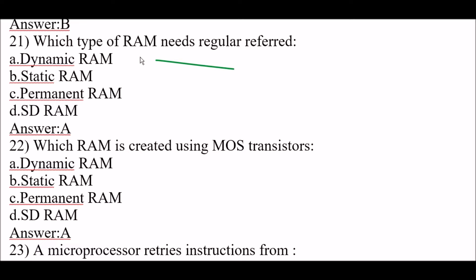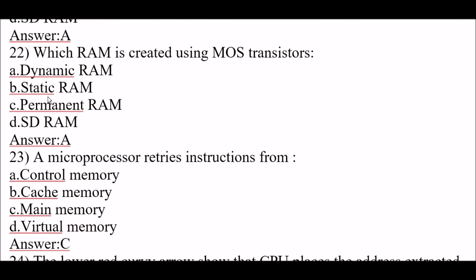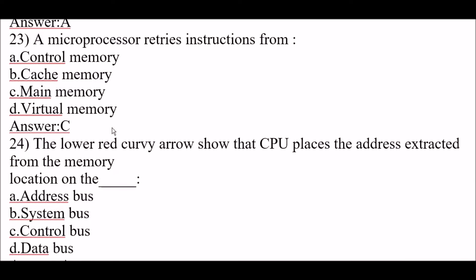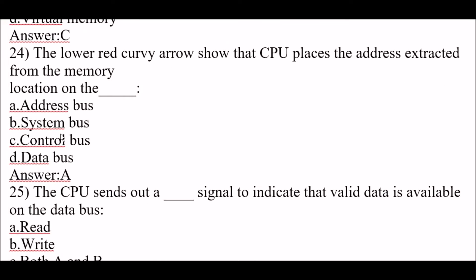Next question: the RAM created using bipolar transistors is called static RAM. Next question: which type of RAM needs regular refresh? Dynamic RAM needs regular refresh — option A. Next question: which RAM is created using MOS transistors? Option A, dynamic RAM, is created using MOS transistors. Next, a microprocessor retrieves instructions from main memory — option C is correct.